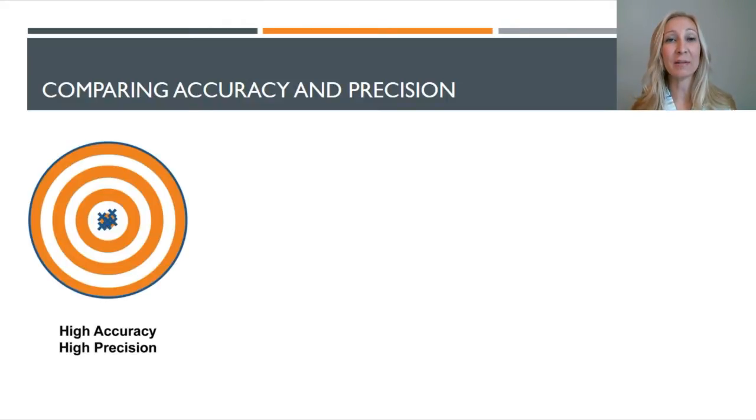Now say we have six trials of something, and we have high accuracy and high precision. All six trials are going to be close to each other, which will show high precision. And they're also going to be centered around the bullseye, which shows high accuracy.